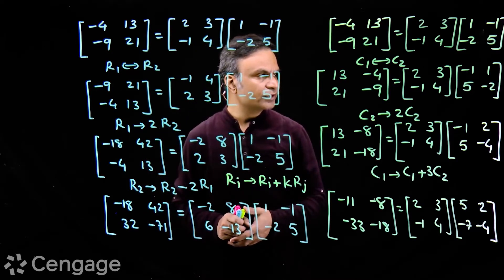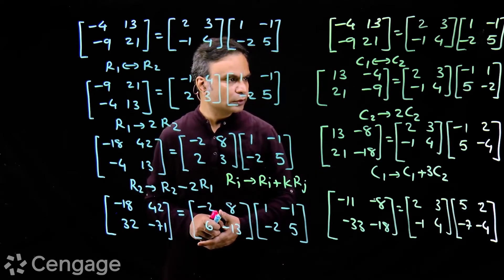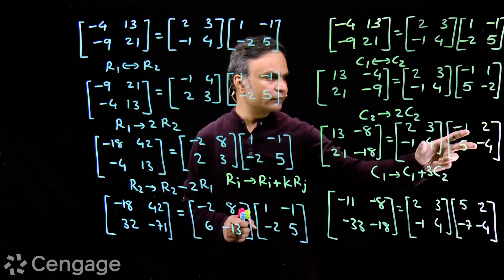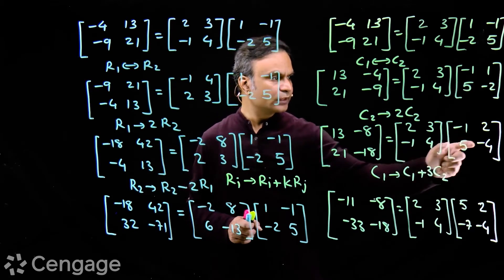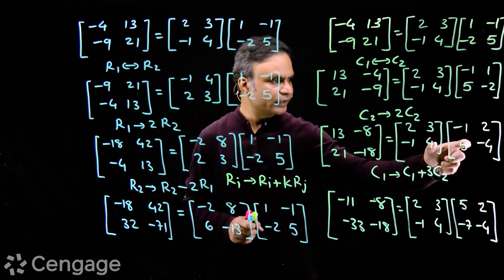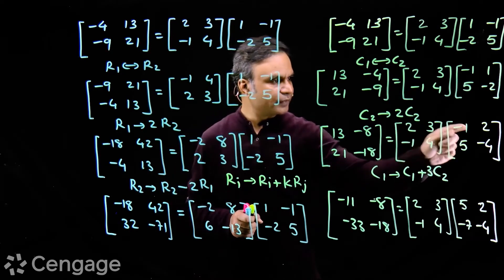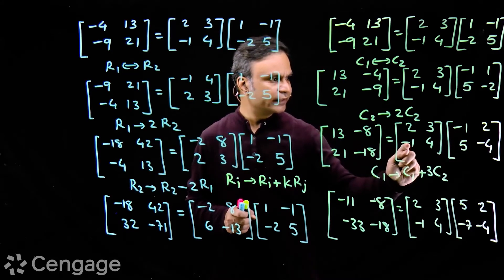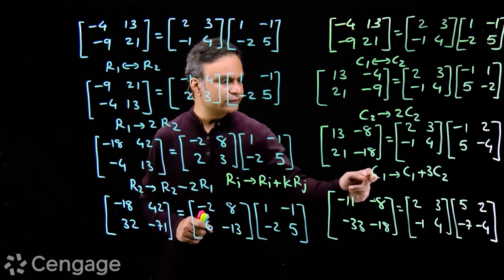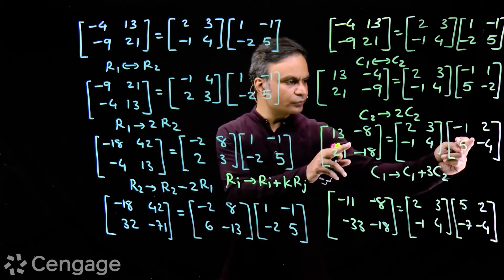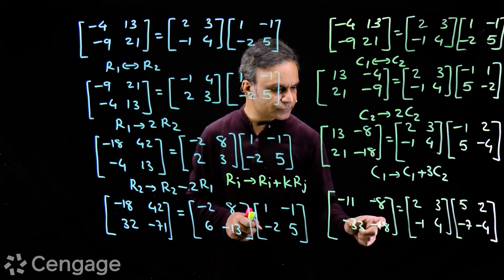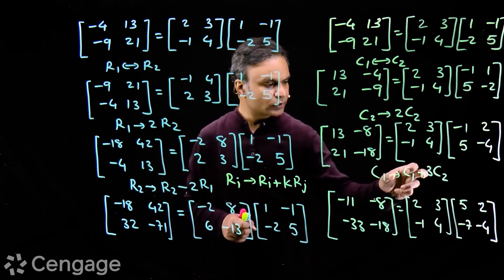Now we do one more column transformation: column 2 changes to 2 times column 2. We are multiplying elements of column 2 by 2. So on the LHS we have this new matrix, and on the RHS the first matrix is the same, while this matrix transforms with C2 → 2*C2. The product of these two matrices is: -2 + 15 = 13, 4 - 12 = -8, 1 + 20 = 21, -2 - 16 = -18. Similarly, doing one more column transformation C1 → C1 + 3*C2 in these two matrices simultaneously, we have this new system, and in this system also the product equals the transformed matrix.